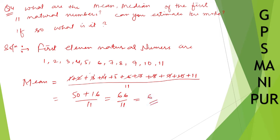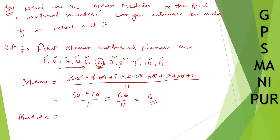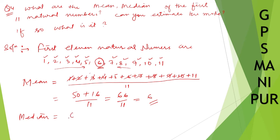Now let us find the median. Median means the middle number. From the list, start counting: 1, 2, 3, 4, 5 from one side, and 1, 2, 3, 4, 5 from the other side — the number in the middle is 6. So the median is 6.